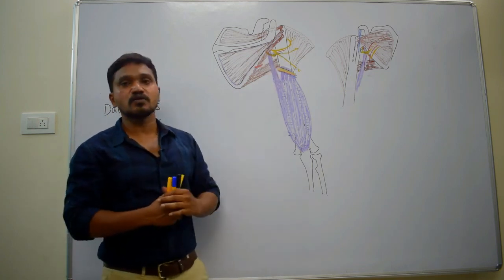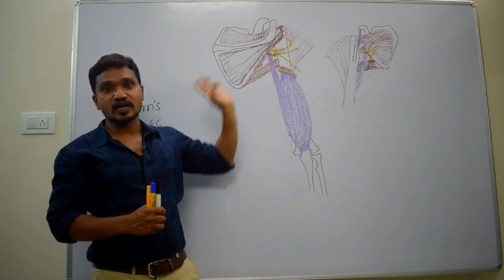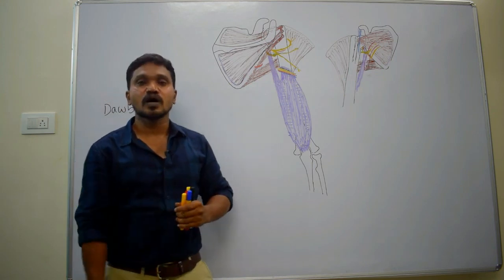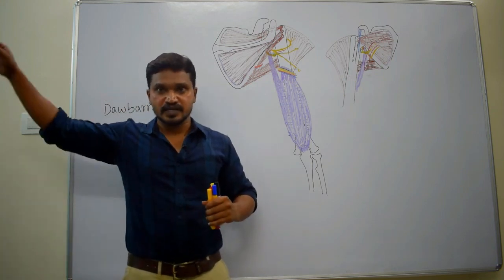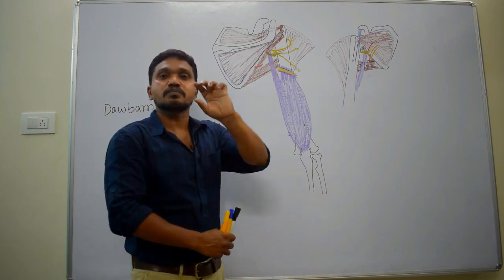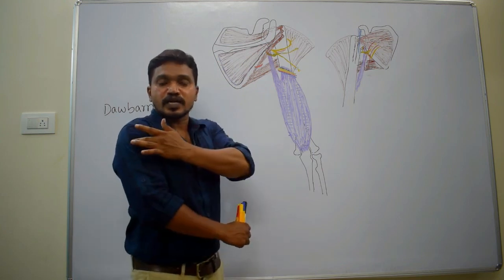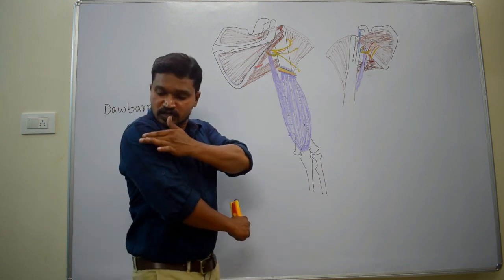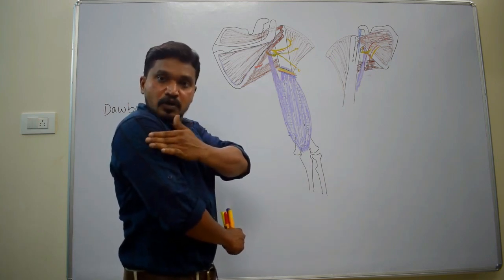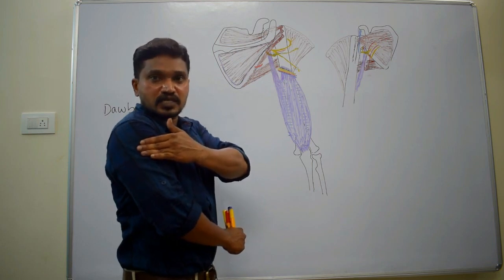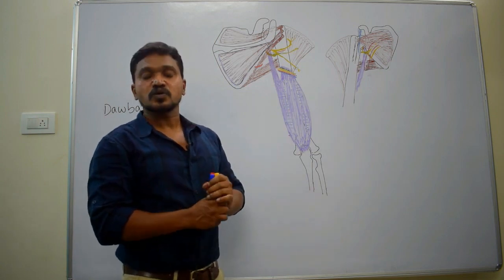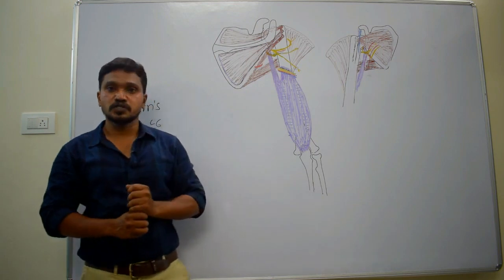If the axillary nerve is injured, the deltoid muscle will be paralyzed, resulting in loss of abduction up to 90 degrees. The deltoid muscle will undergo atrophy, making the greater tuberosity prominently visible. There will also be loss of sensation over the skin of the deltoid muscle, especially the regimental badge area — the area where army personnel wear their badge. Additionally, there will be paralysis of the teres minor. These are the clinical features when the axillary nerve is injured.